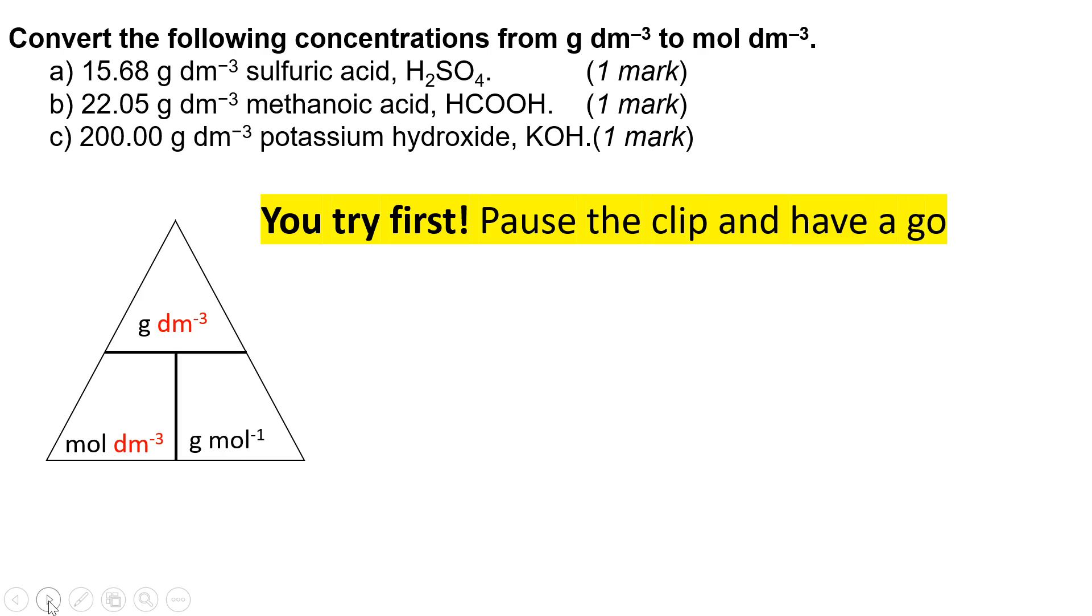Right, so I'm assuming you've had a try of one or two of those. The first one is concentration in grams per decimeter cubed over molar mass: 15.68 over 98.1 for sulfuric acid, and that gives you 0.1598.